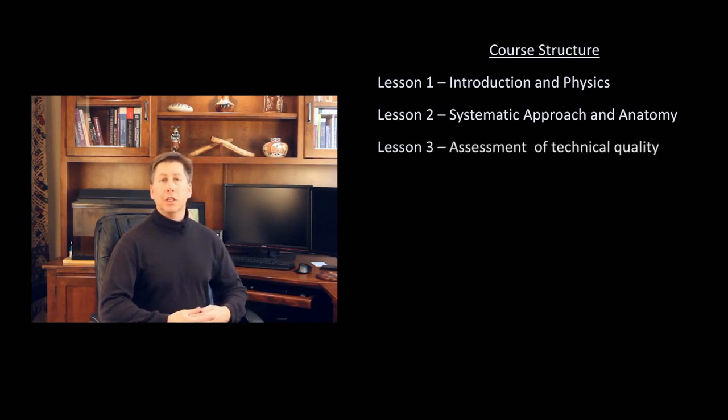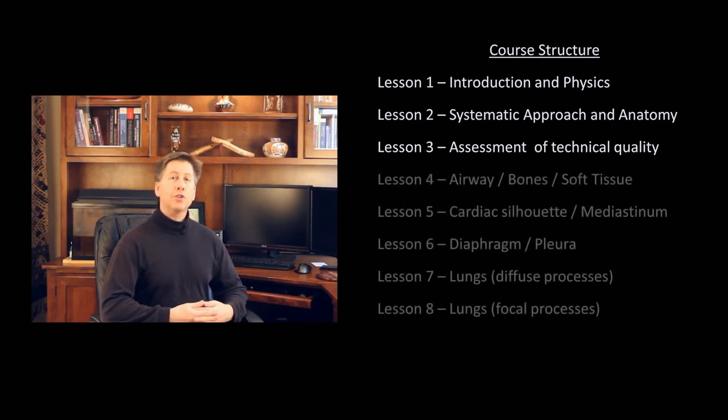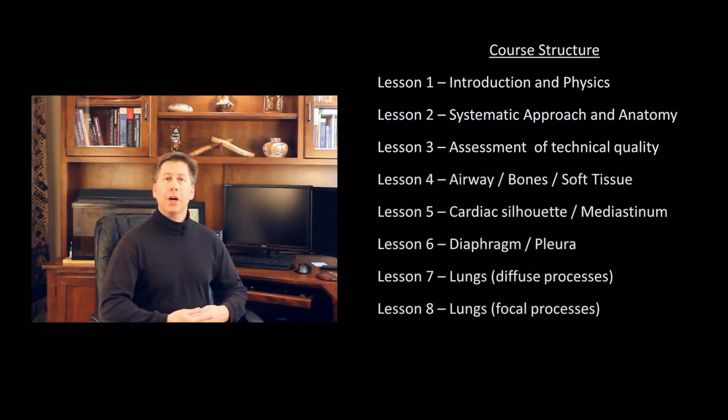Lesson 3 will discuss how one assesses the technical quality of the film. Lessons 4 through 8 will then each cover a subset of chest pathology that can be assessed with x-ray. These will include plenty of examples of common abnormalities. Lesson 9 will discuss how to assess the placement of lines and tubes, as well as how to identify devices and findings consequent from prior surgeries, such as artificial heart valves.